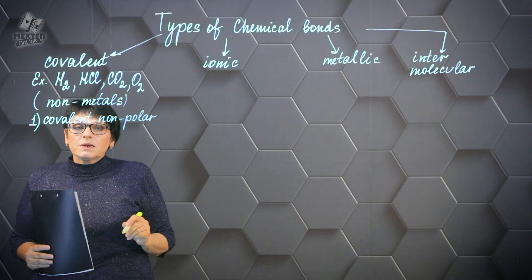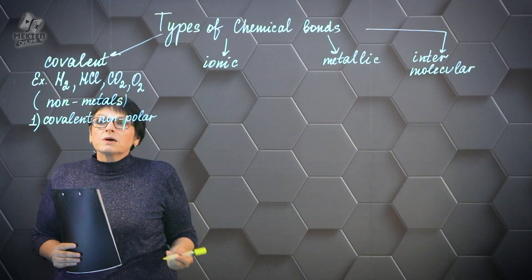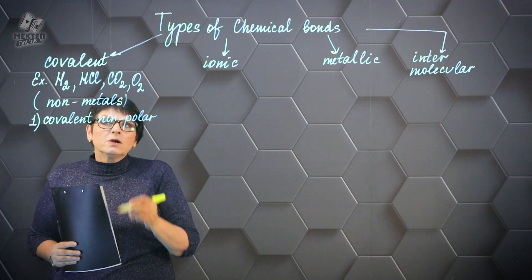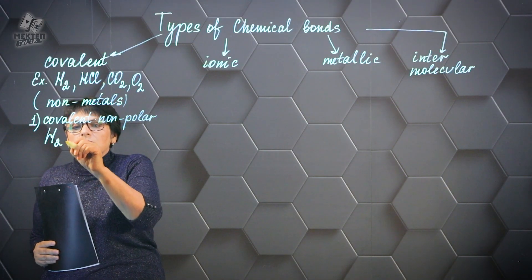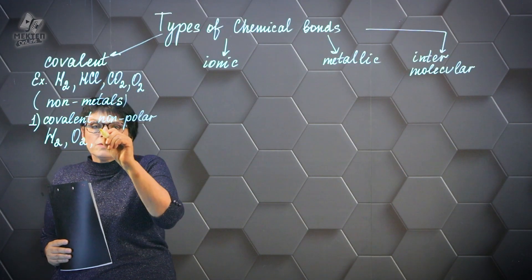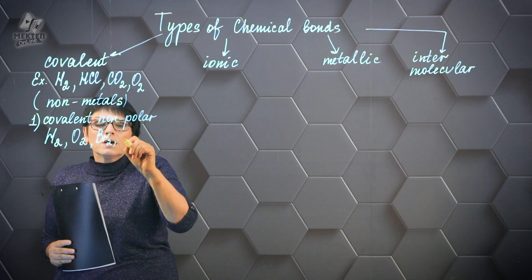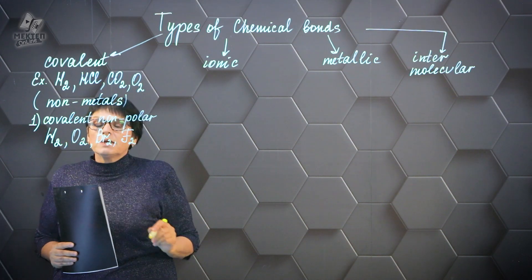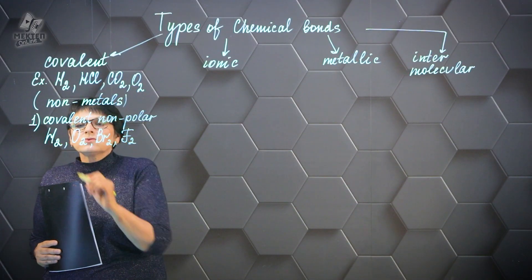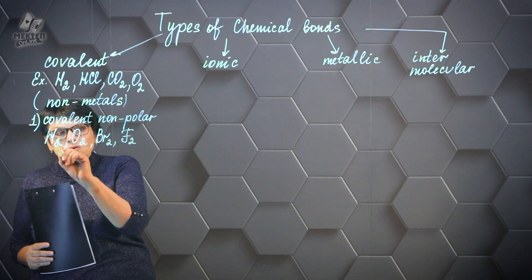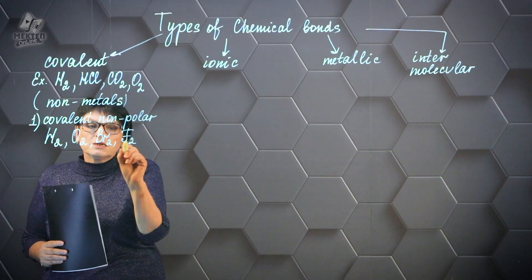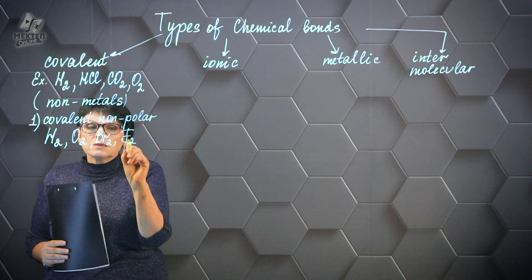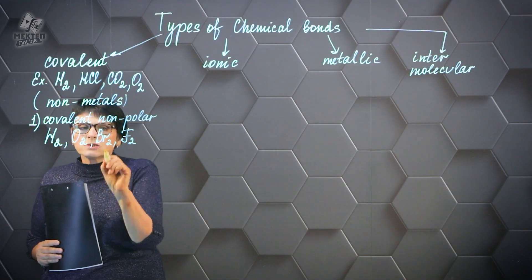And there's also covalent polar. From these examples, you'd guess a covalent non-polar bond is hydrogen-hydrogen (H2), oxygen-oxygen (O2), bromine (Br2), or fluorine (F2). It's easy to see that a covalent non-polar bond occurs when only one element is involved — hydrogen and hydrogen, oxygen and oxygen, and so on.